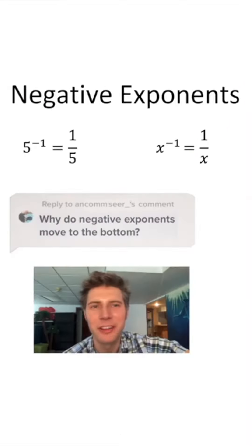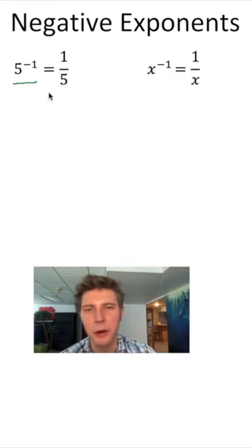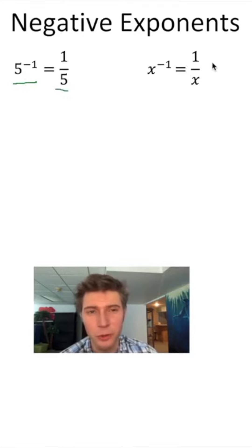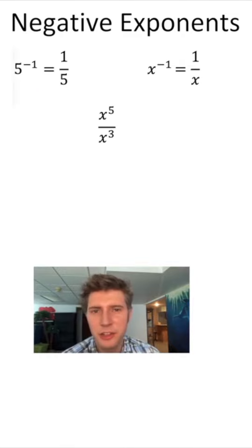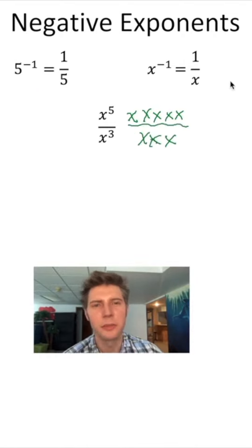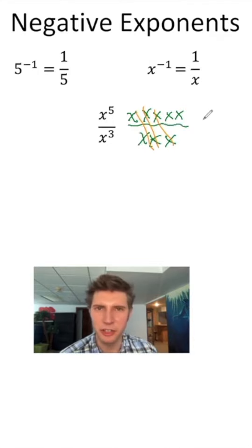Why do negative exponents move to the bottom? 5 to the power of negative 1 equals 1 fifth — you just put the 5 on the bottom. And x to the negative 1 equals 1 over x. Imagine you have x to the 5th over x cubed: that means you have 5 x's on top and 3 x's on the bottom, and three matching pairs are going to cancel.